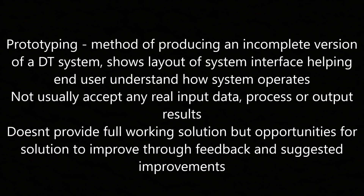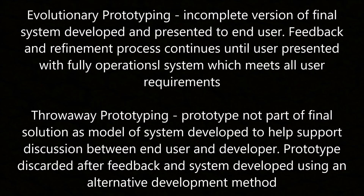Prototyping is a method of producing an incomplete version of a digital technology system. It shows the layout of a system interface, helping the end user understand how a system operates. It doesn't usually accept any real input data, processes, or output results, and it doesn't provide a full working solution, but it offers opportunities for improvement through feedback and suggested improvements. Evolutionary prototyping is an incomplete version of the final system developed and presented to the end user; the feedback and refinement process continues until the user is presented with a fully operational system which meets all user requirements.